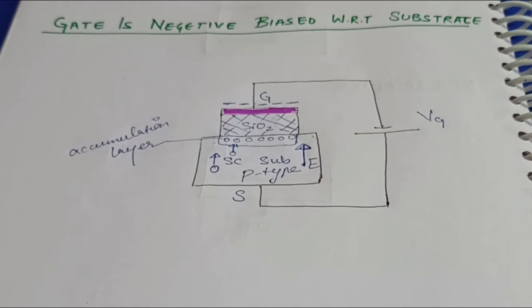The positive charges in the accumulation layer act as the positive charges at the bottom plate of the capacitor. The MOS capacitor is now under accumulation mode. Near the interface, the semiconductor appears to be more p-type. Since no current passes through the MOS capacitor, it is under equilibrium.